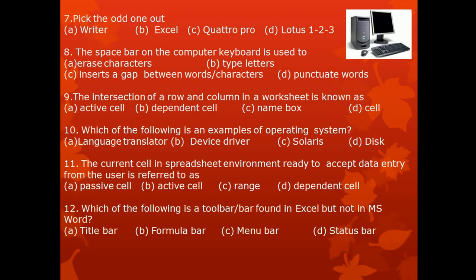Question 9. The intersection of a row and column in the worksheet is known as: A. active cell, B. dependent cell, C. name box, D. cell.